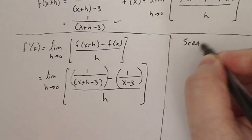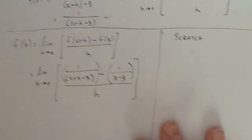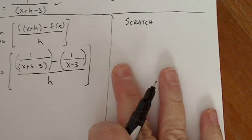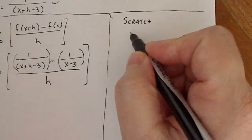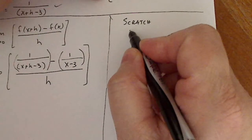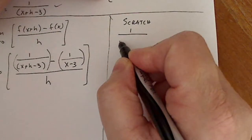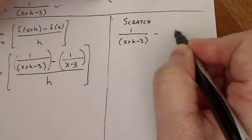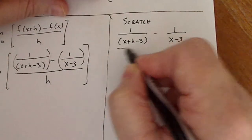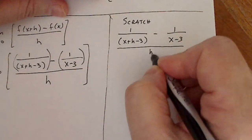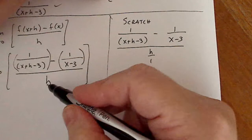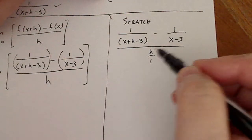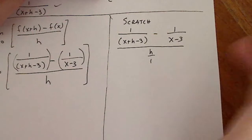So this is our scratch work. So I'm going to simplify just this thing in the brackets. So start with one divided by x plus h minus three minus one over x minus three divided by h over one. I always do that because that way I know I have three layers, one, two or four layers. One, two, three, four just makes it simpler.